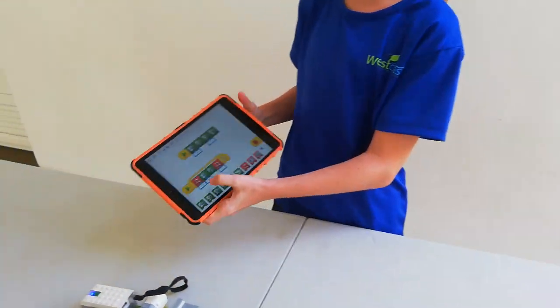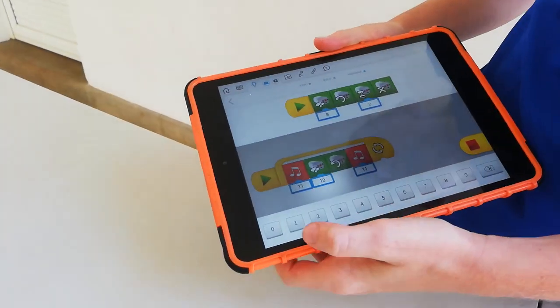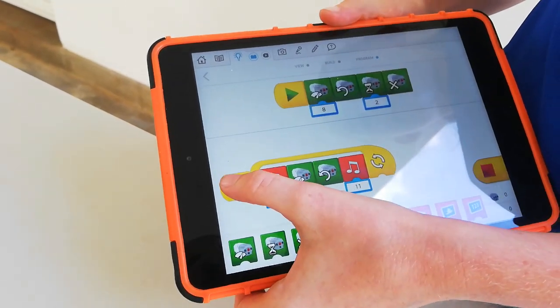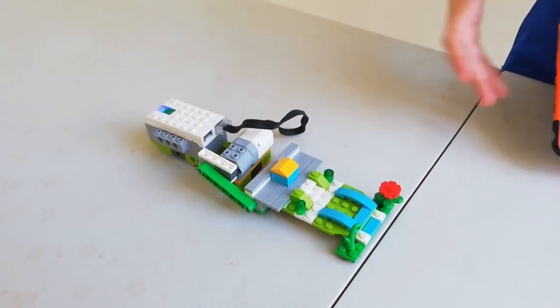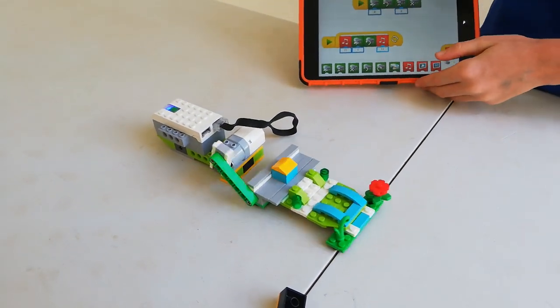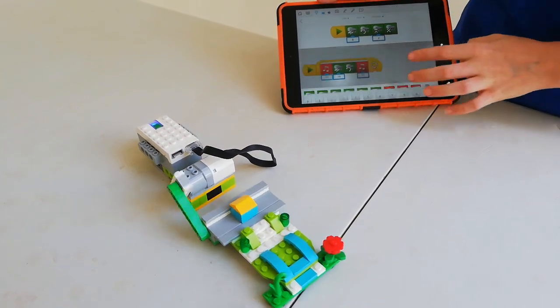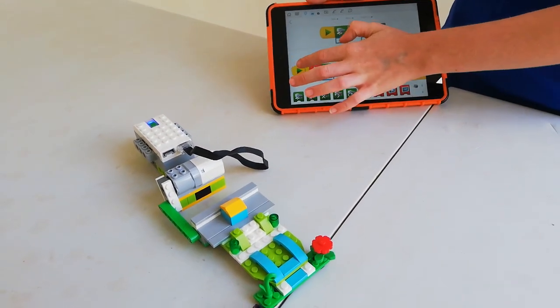What you can do is you can change the speed of it by choosing these and it goes slower and faster. And I like to put it on 10 because then it shows like a real earthquake.